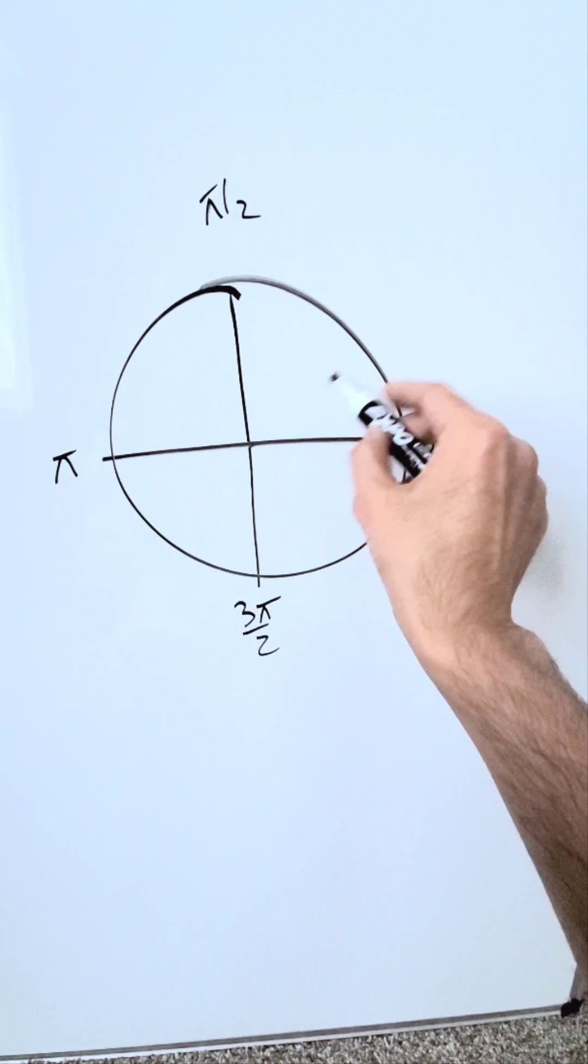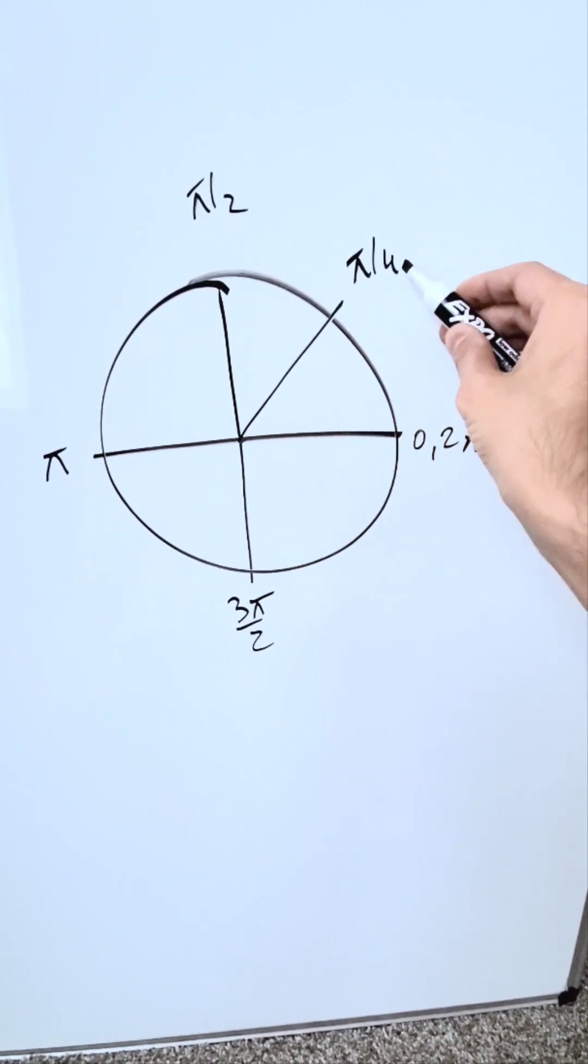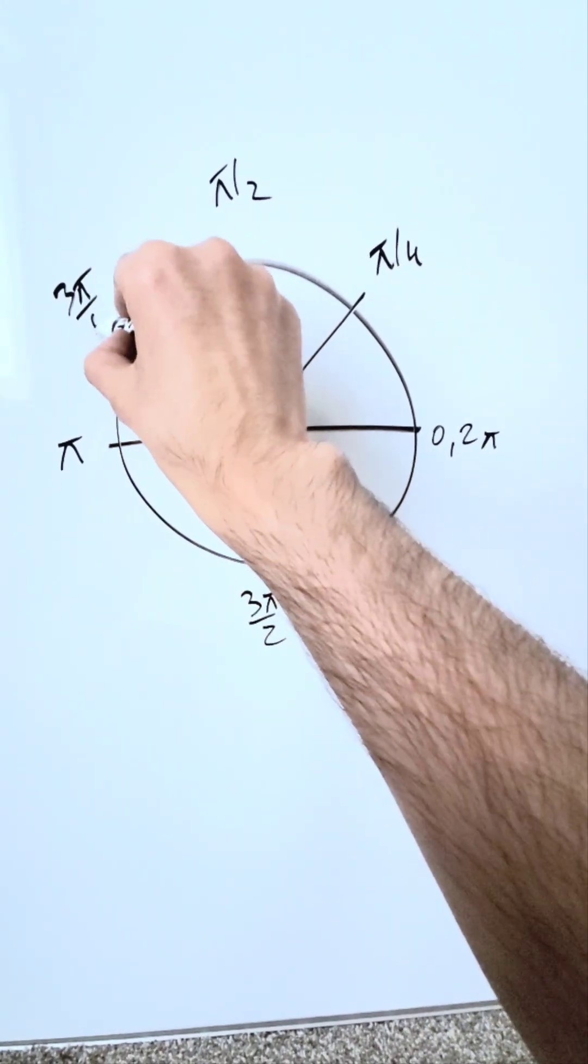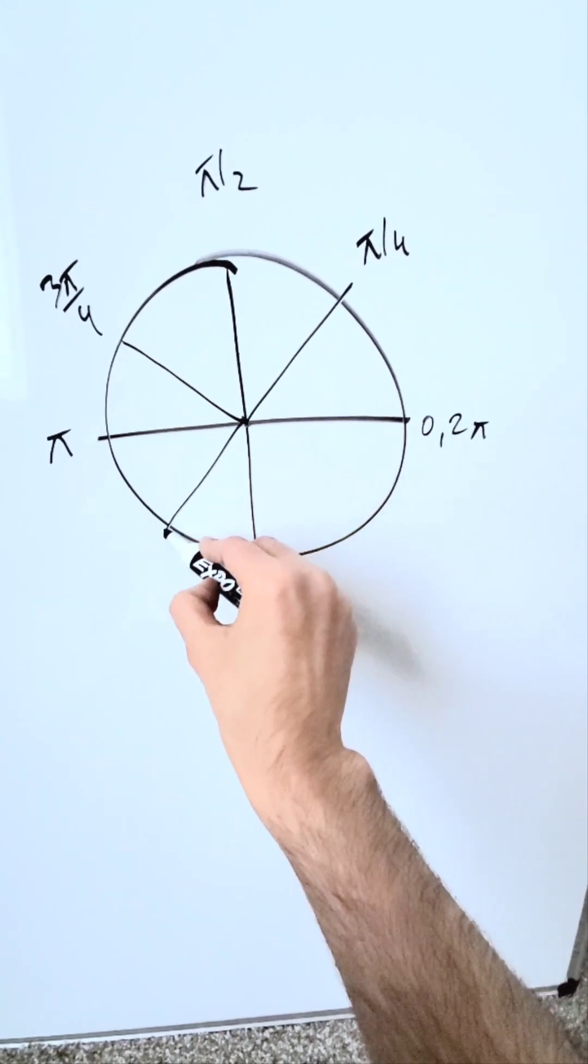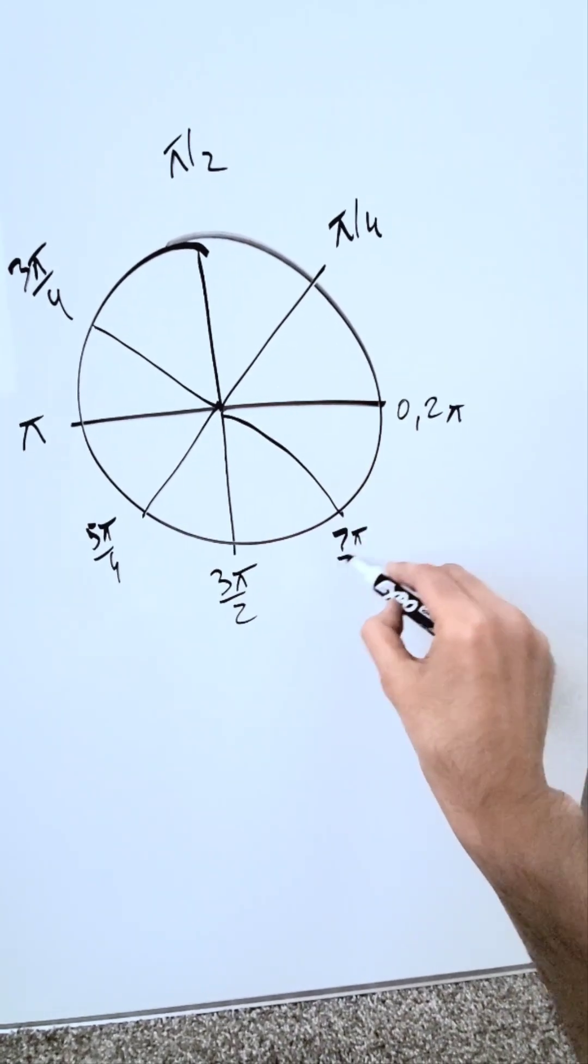Now, in the middle of these, you will have the 45 degree angles. Here's 45, π over 4. The denominators will be all 4 for your 45 degree angles. 135 will be 3π over 4. 225, 5π over 4. And then, 315, 7π over 4.